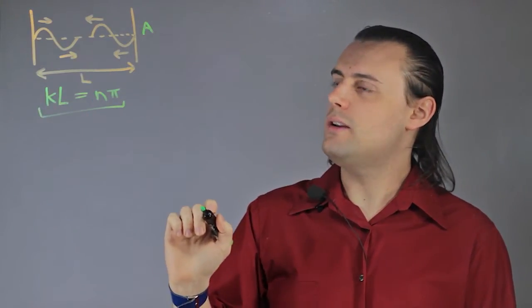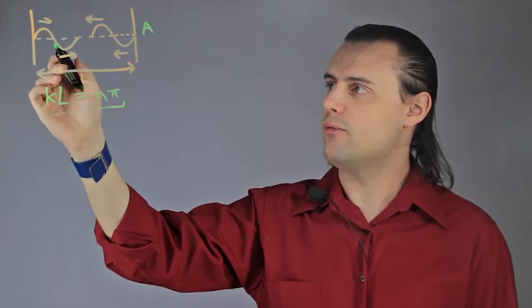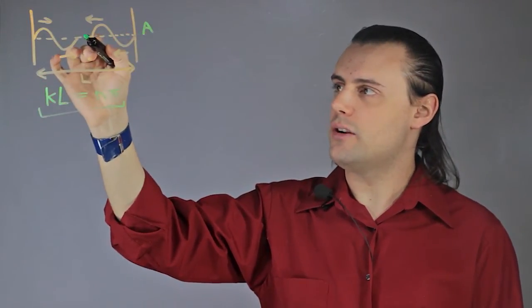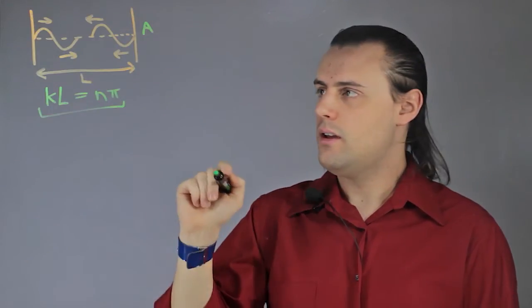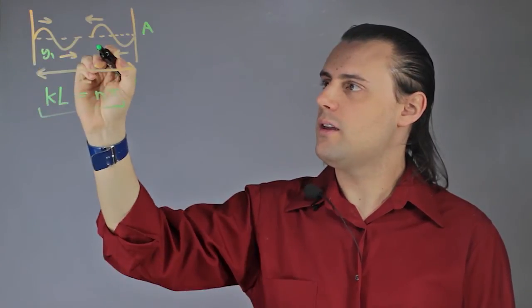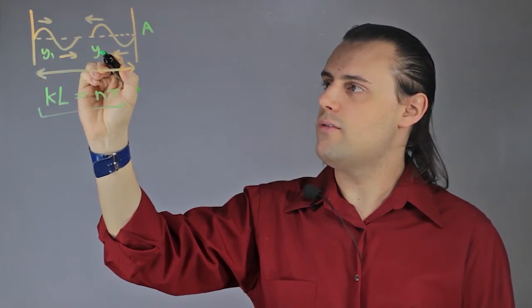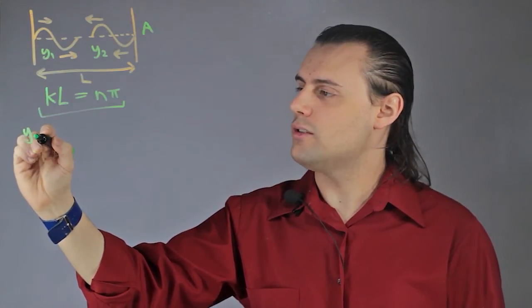So how can we describe mathematically the resulting wave of these two opposing waves? When they meet each other head-on, they're going to interfere with each other. If we describe the first wave, which I'll denote as y₁, and the second wave as y₂, I can write down mathematical functions for them.